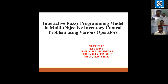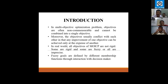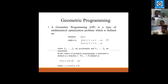This is the introduction session. In multi-objective optimization problems, objectives are often non-commensurable and cannot be combined into a single objective. The objectives usually conflict with each other, and any improvement of one objective can be achieved only at the expense of another.